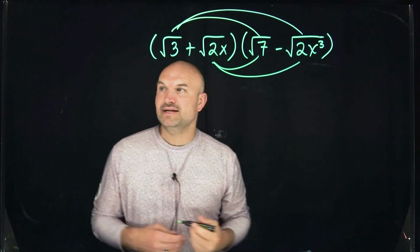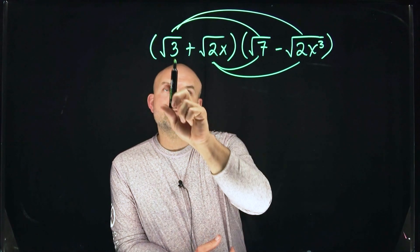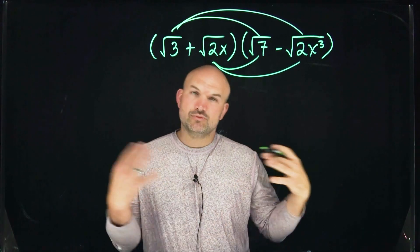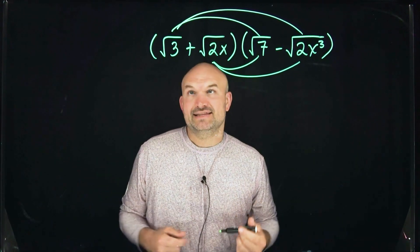Now, remember, when you're multiplying radicals together, as long as the index is the same, which you can see these are all square roots, all you're simply going to do is multiply the radicand times the radicand. Then what we'll do is we'll combine like terms, if there are any, and then as well as simplify at the very end.